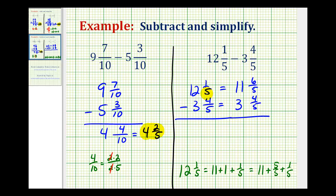Again, the reason we had to borrow is we can't subtract 4 fifths from 1 fifth. We had to borrow from the 12. Now that we've borrowed, we can subtract. So 6 fifths minus 4 fifths would be 2 fifths, and 11 minus 3 is equal to 8.